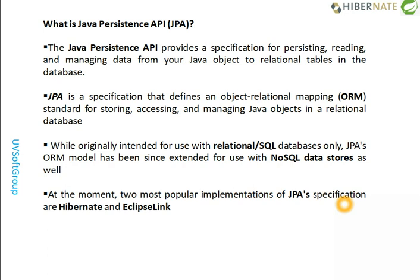JPA is a specification and has many implementations like Hibernate and EclipseLink. An important clarification: Spring Data JPA is not a direct implementation of JPA — it is an abstraction of JPA. Underneath Spring Data JPA, there is ORM and Hibernate running against the specification. Spring Data operates at an abstract level on top of the JPA specification.